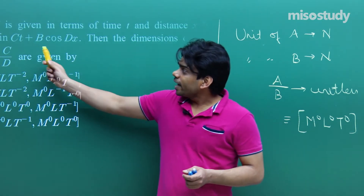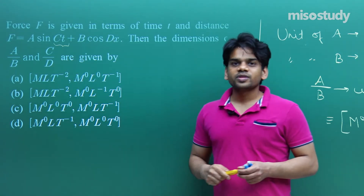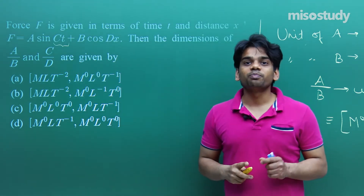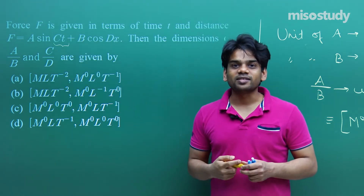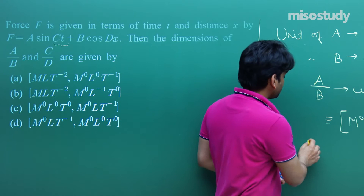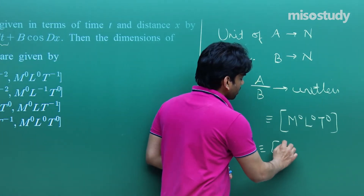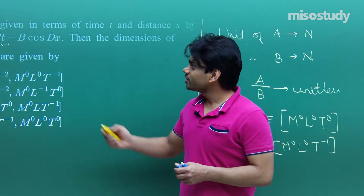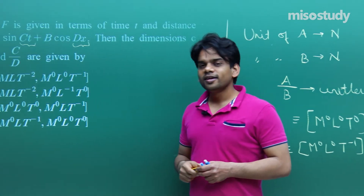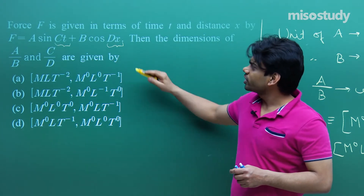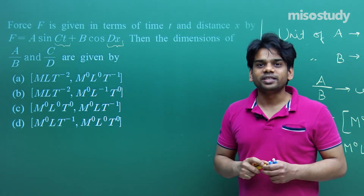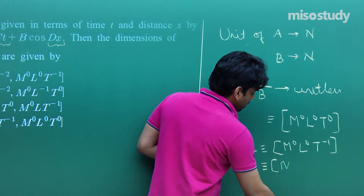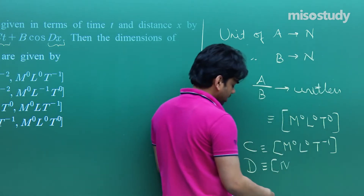Now let's find c/d. Since ct must be dimensionless and t has units of time (seconds), c will have units of per second. So the dimension of c is M⁰L⁰T⁻¹. For dx, since x is distance (length), d must be per meter, giving d a dimension of M⁰L⁻¹T⁰.